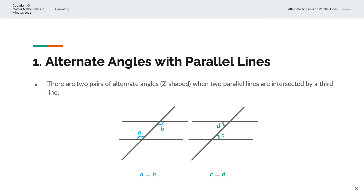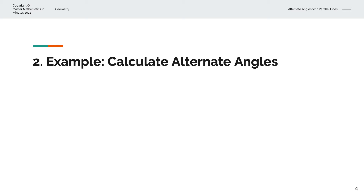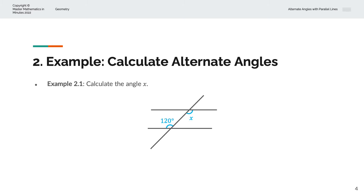Let's take a look at a couple of examples. In the first example, we're asked to calculate the angle X. We can recognize that this line is parallel to this line, and this is the third intersecting line. This angle is 120 degrees, and the alternate angle of this is X, because it makes up the Z-shape. We know that alternate angles are equal to each other, so X is equal to 120 degrees.